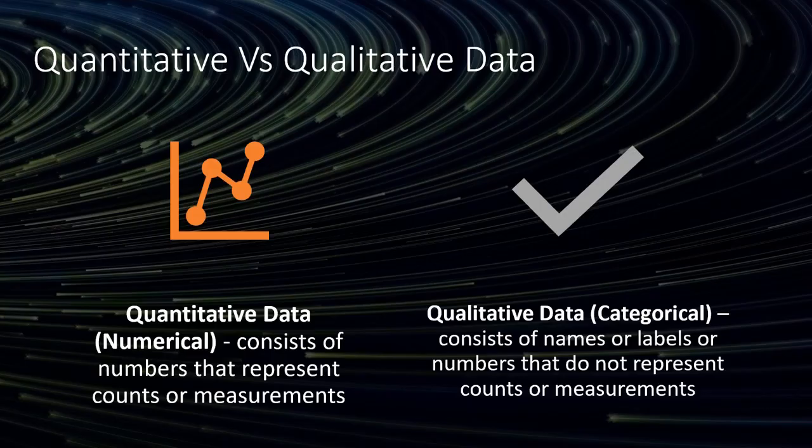Okay, let's start with the definitions. Quantitative type data consists of numbers that represent counts or measurements. Qualitative type data consists of names or labels, or can be numbers as well, but those numbers don't represent counts or measurements.